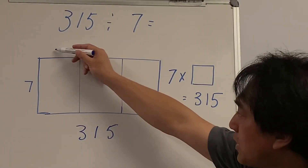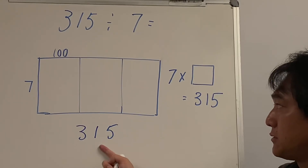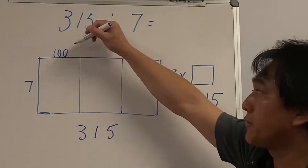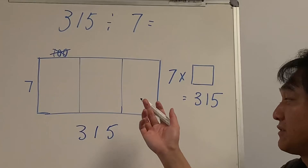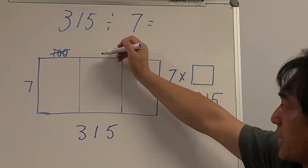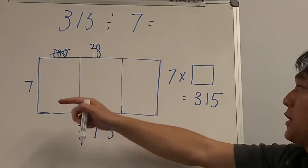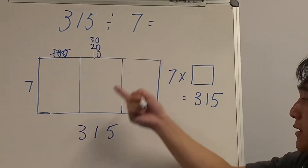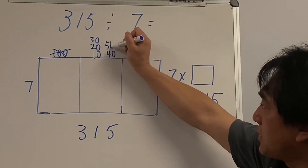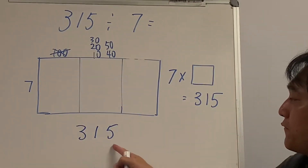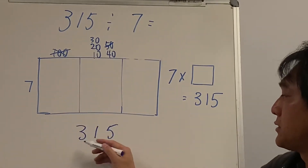How many hundreds? 100 times 7 is 700 — too many! So I cannot use the hundreds column. That was the difficulty here. Let's go with the tens: 10×7=70, 20×7=140, 30×7=210, 40×7=280 — still fits. 50×7=350 — too many, and I only have 315. So 40 times 7 is 280.